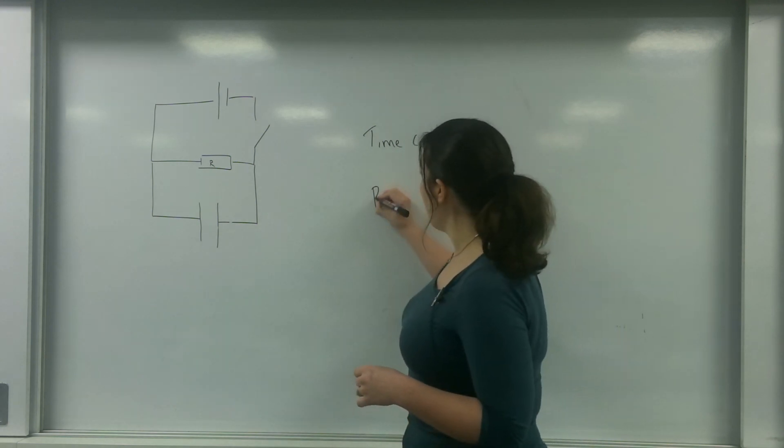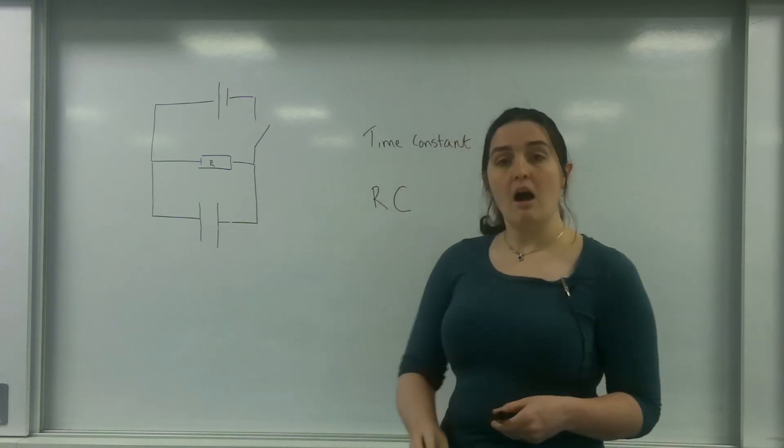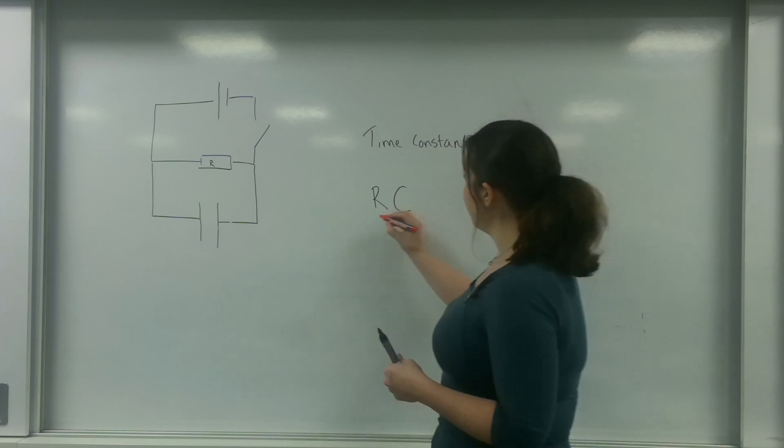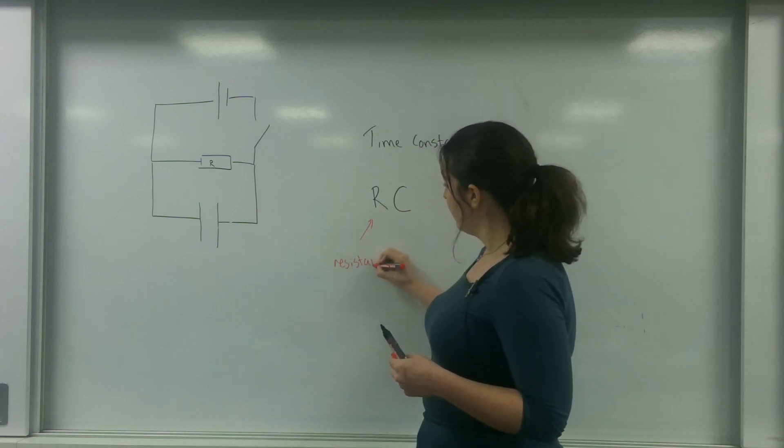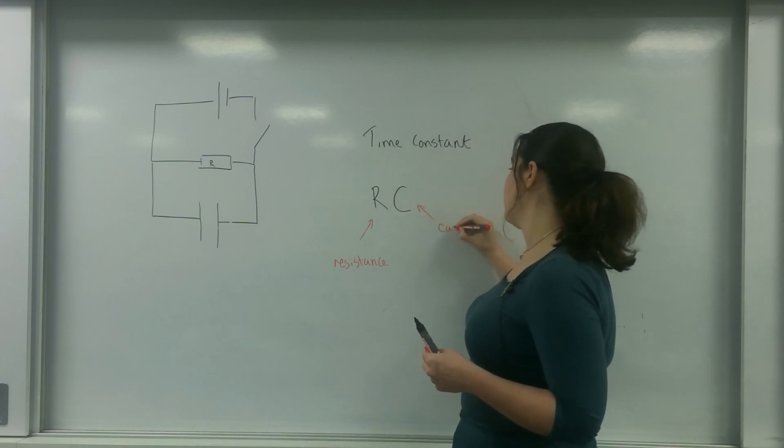It is represented by the letters R and C. It's R times C. This is the resistance of the circuit, and this is the capacitance.